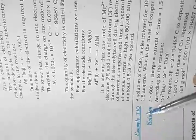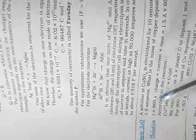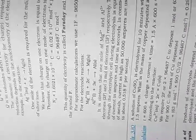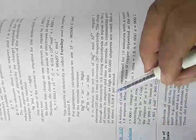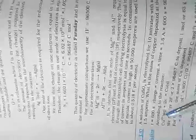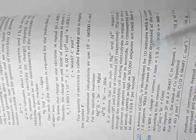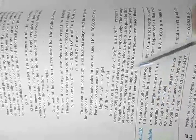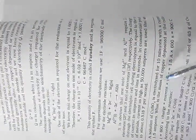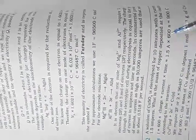Now we are solving Example 3.10. A solution of copper sulfate is electrolyzed for 10 minutes with a current of 1.5 amperes. What is the mass of copper deposited at the cathode? Applying Q = IT: T = 10 minutes = 600 seconds. Q = 1.5 A × 600 s = 900 C.